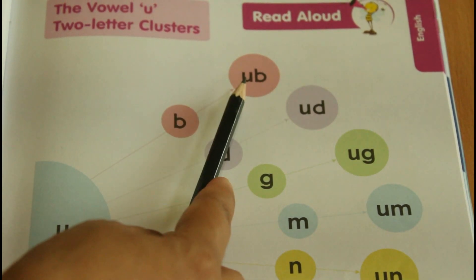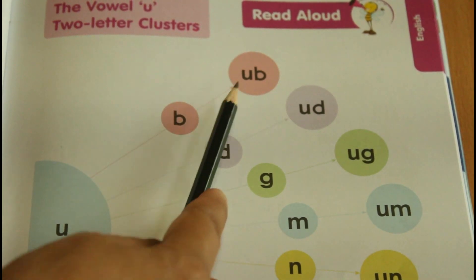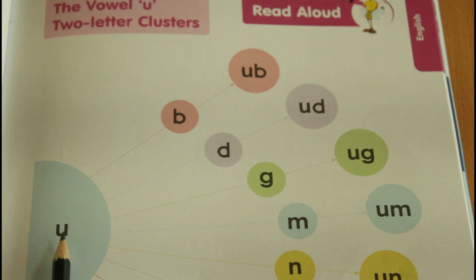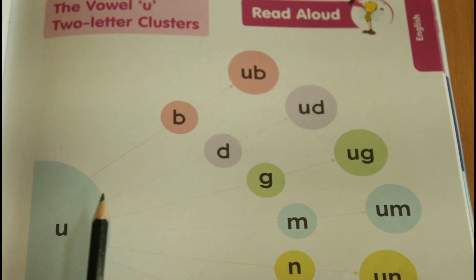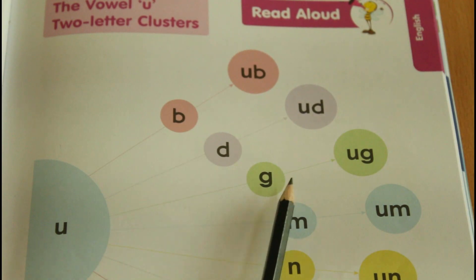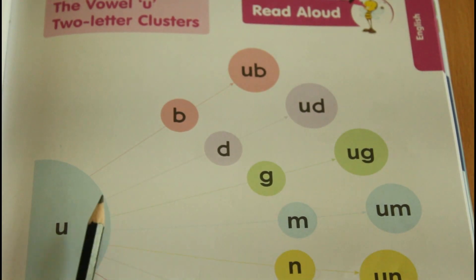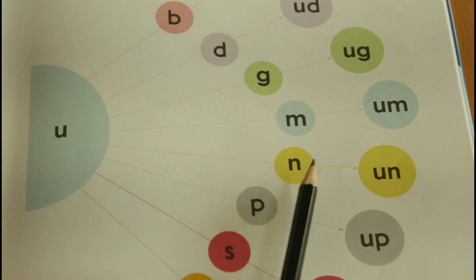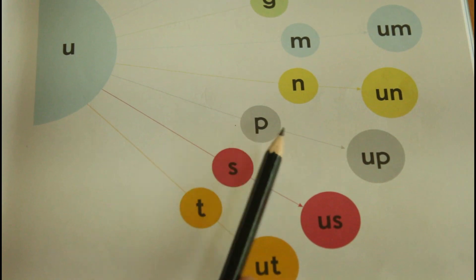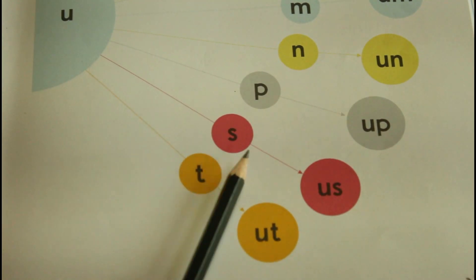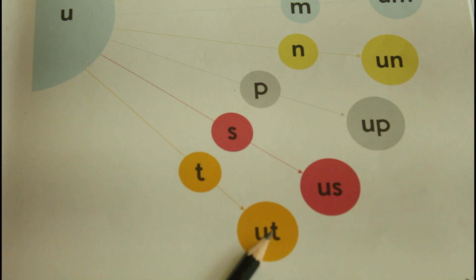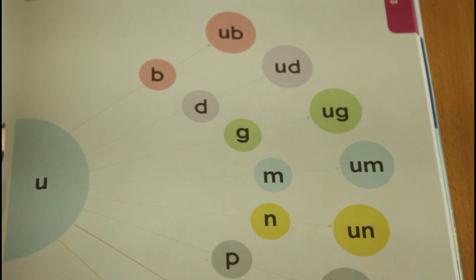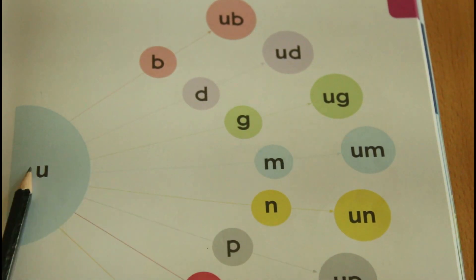Let's see what families they made. U-B: 'ub.' U-D: 'ud.' U-G: 'ug.' U-M: 'um.' U-N: 'un.' U-P: 'up.' U-S: 'us.' U-T: 'ut.' These are the friends the U vowel made with consonants B, D, G, M, N, P, S, and T.